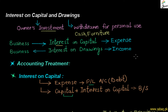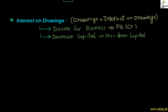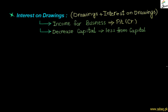Now let's see what is interest on drawings. Interest on drawings is income for the business, because owners pay interest to the business on the amount they have withdrawn. This interest on drawings is therefore the income of the business, and it is written on the credit side of the profit and loss account, also called the income statement.